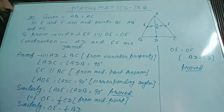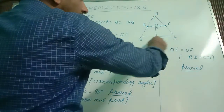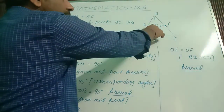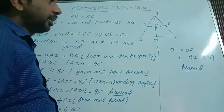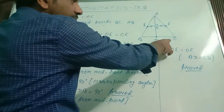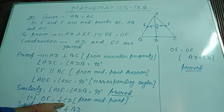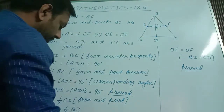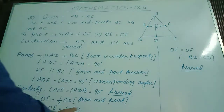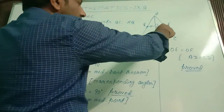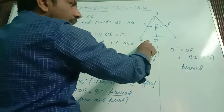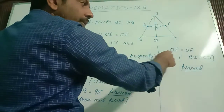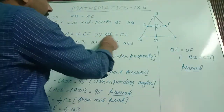For part two: OF is half of BC because EF is the line joining the midpoints, so OF is half of BC from the midpoint theorem. Similarly, OE is also half of BD from the midpoint theorem. So OE equal to OF because OF equals half of CD and OE equals half of BD, and CD and BD are both equal, therefore OE and OF are both equal — part two is also proved.